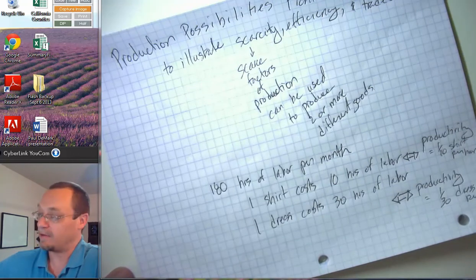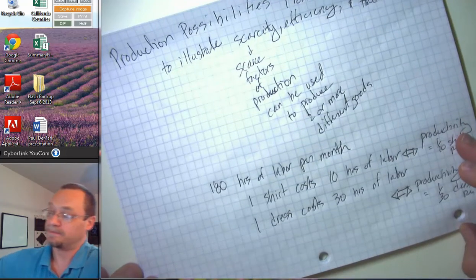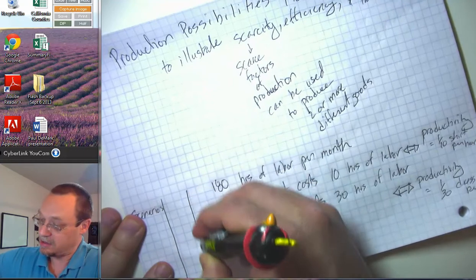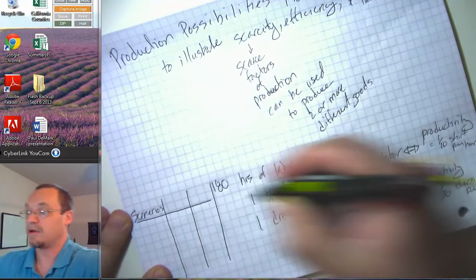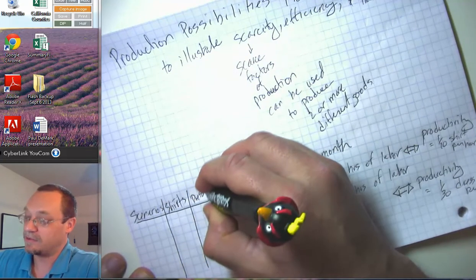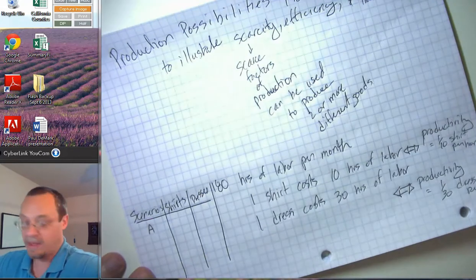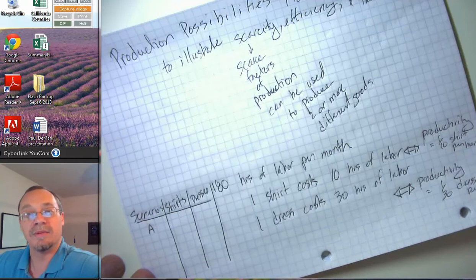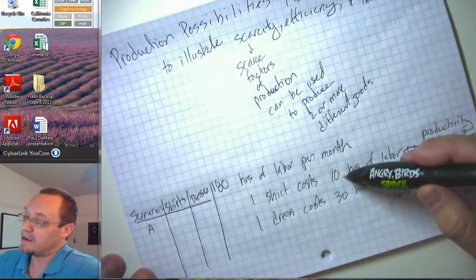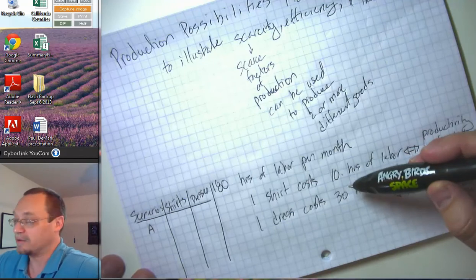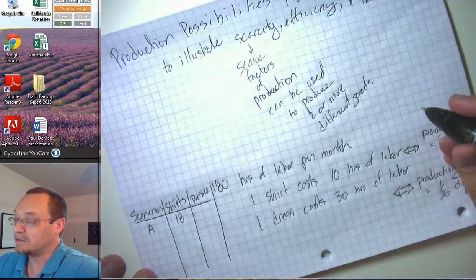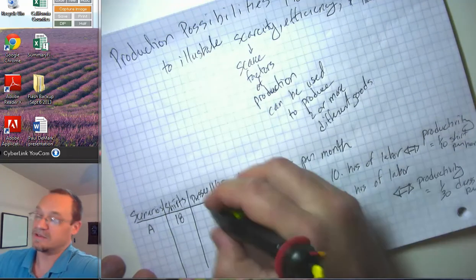Now let's think about the different ways we can divide up our time — these are different scenarios with different amounts of shirts and dresses. In scenario A, we put all of our labor into shirts. With 180 hours and each shirt costing 10 labor hours, 180 divided by 10 gives us 18 shirts produced and zero dresses.